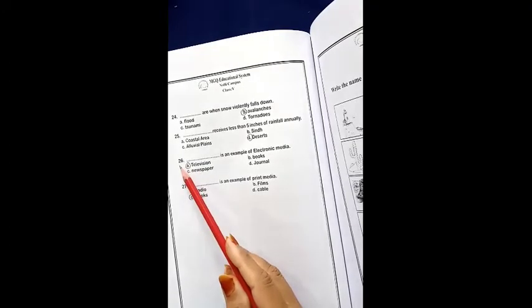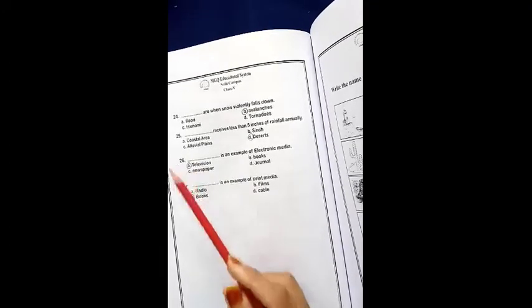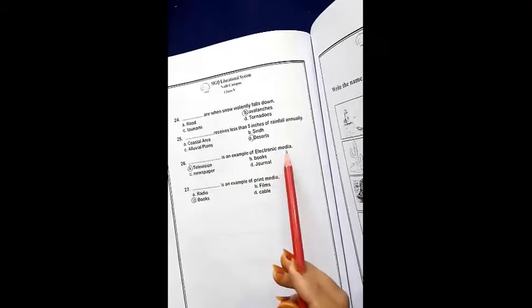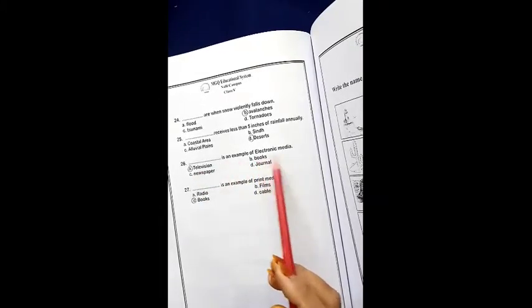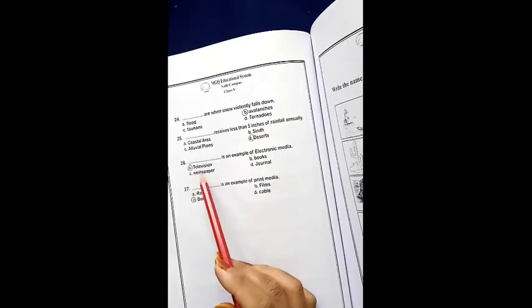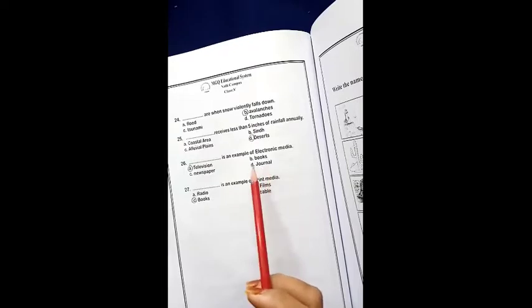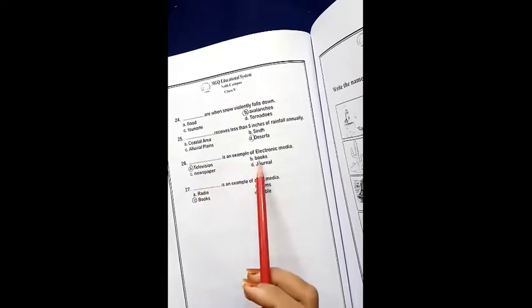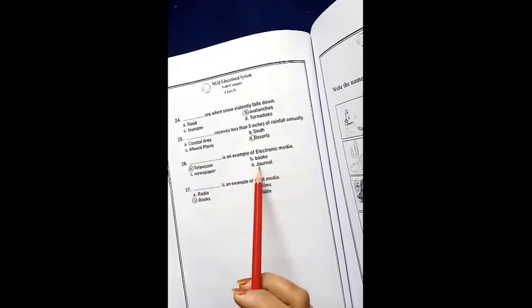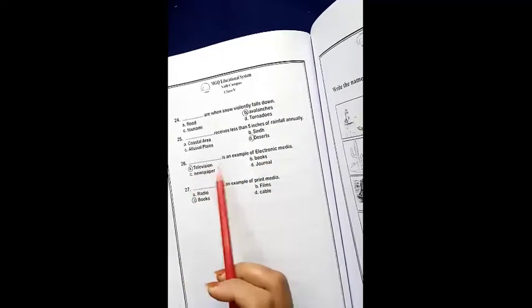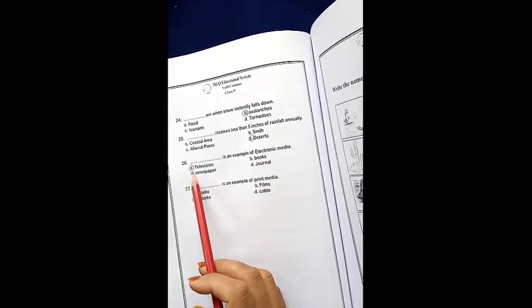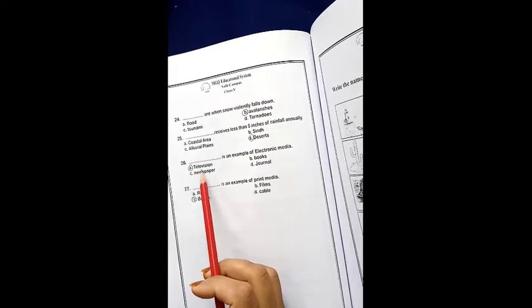Next, MCQs number 26. Dash is the example of electronic media. A, television. B, books. C, newspaper. D, journal. Television, Books, Newspaper, Journal. Electronic Media is Television. A, we have the right option. Television is the right answer.